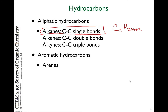For every number of carbon atoms, there's twice that number plus 2 hydrogens that make up an alkane. We'll see for alkenes and alkynes — we call these unsaturated hydrocarbons because they are lacking some of those hydrogens. We'll also be spending time later talking about another class of hydrocarbons called the aromatic hydrocarbons, or arenes.